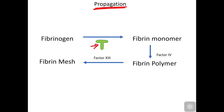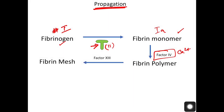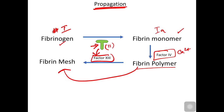This is the third step — propagation. The large amount of active thrombin converts fibrinogen (factor 1) into fibrin monomers in the presence of calcium (factor 4). These fibrin monomers become fibrin polymers, and the polymers form cross-links in the presence of factor 13, which is again activated by thrombin. With factor 13, strong cross-linking forms between polymers, resulting in a strong fibrin mesh work.